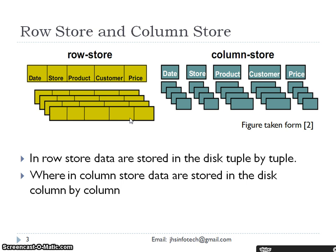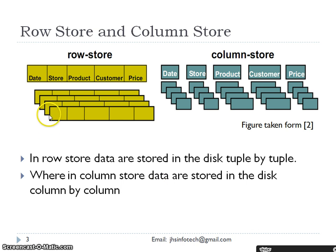In column storage, it is not like that. If we have entered data for date, store, and product but not for customer or price, then those two tables are not touched at all. They are individual tables — data is stored in those three tables and the other two have not been touched. In row store, data is stored on disk tuple by tuple. In column store, data is stored on disk column by column.